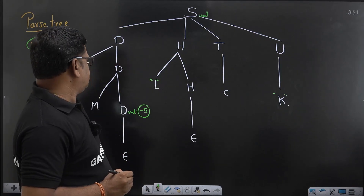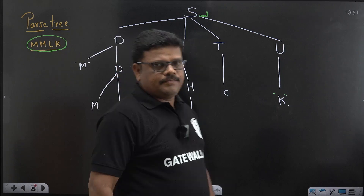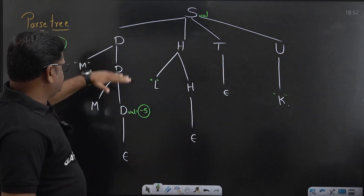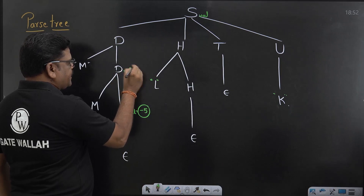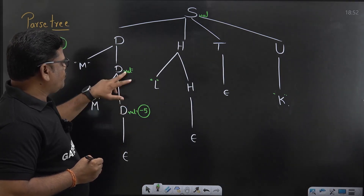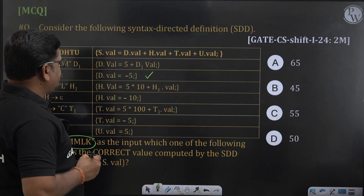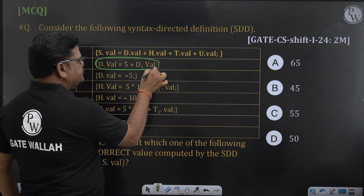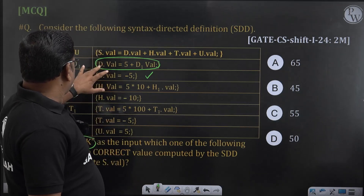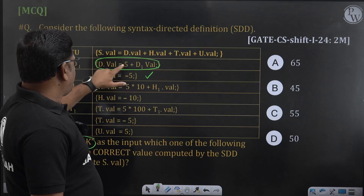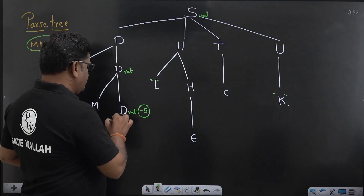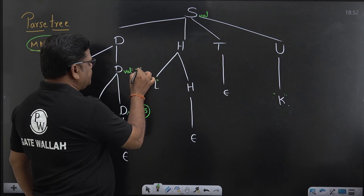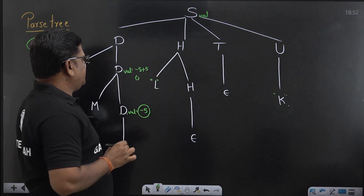We evaluate attribute information at every node. Whenever the parser uses the production D → MD, the semantic rule says D.val = D1.val + 5. Here D1 refers to the child D node, so minus 5 plus 5 — this becomes 0. So D.val will be 0.